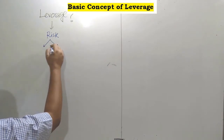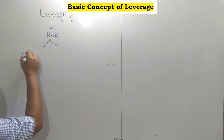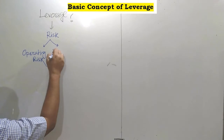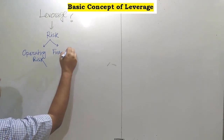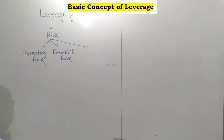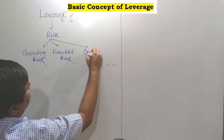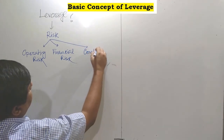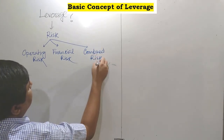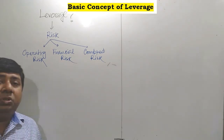In the perspective of business, a risk can be categorized in two parts. One is operating risk, and another one is financial risk. There may be another risk also taken into consideration — that is combined risk, sometimes also called total risk.